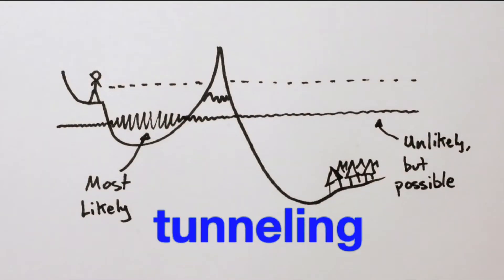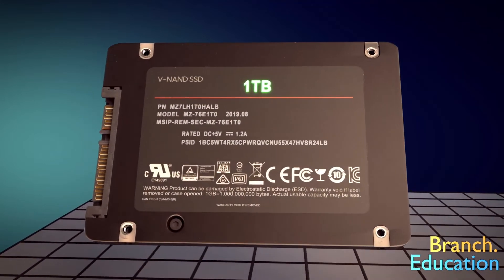This is called tunneling because it is as if the ball simply tunneled through the mountain.